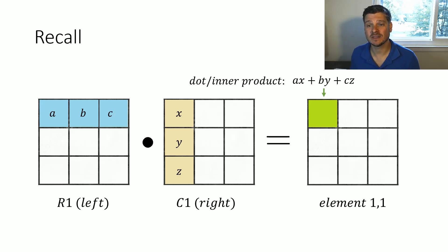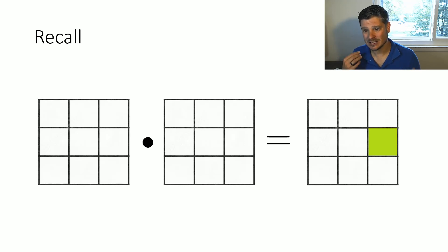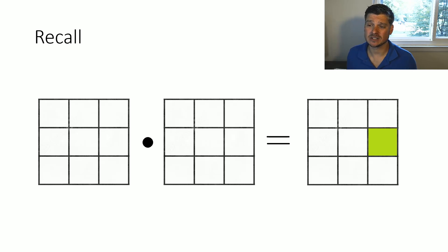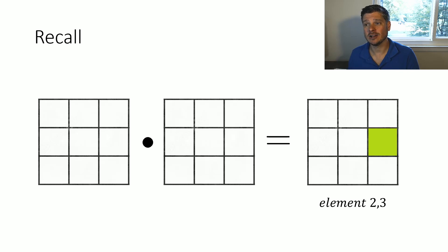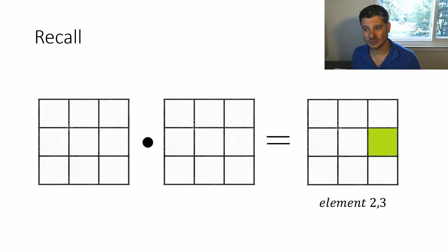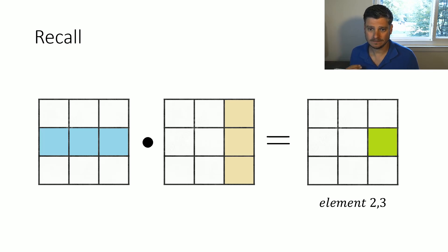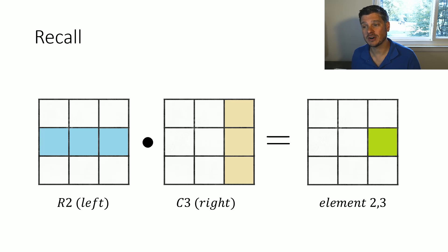That's how we find that entry for that particular element. Let's say I want to find the value going in a specific cell. First, we need to know which cell that is. If I index that cell, it's going to be element two-three because it's in row two, column three — always row first, then column. For my left matrix I need row two, and from my right matrix I need column three. Then I perform that inner product between that row and that column, and that gives me element two-three in my resulting product.